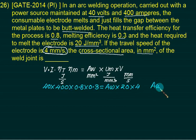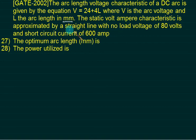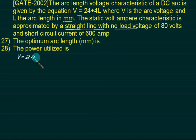Voltage is 40. Arc length? The voltage characteristic is given by V = 24 + 4L, where V is the arc voltage and L is arc length in mm. The static volt-ampere characteristic is approximated by a straight line, with no-load voltage V0 — remember, it is no-load — and the short circuit current is 600 amps. Let us write the equation: V = 24 + 4L, V0 = 80, Isc = 600 amps.